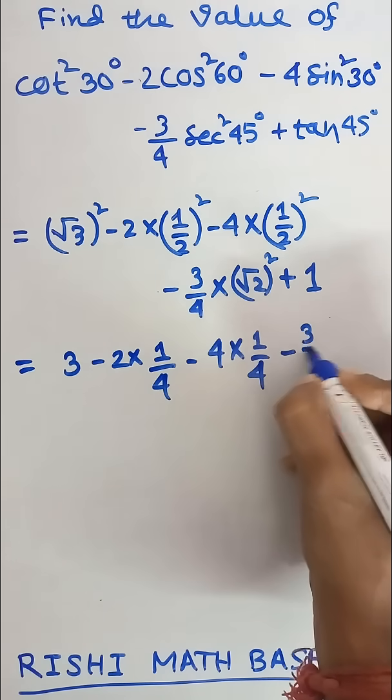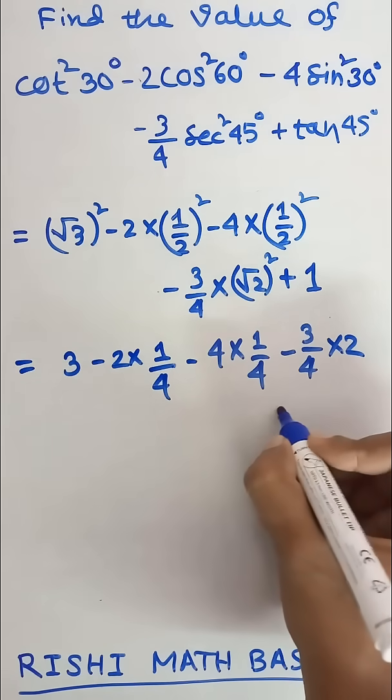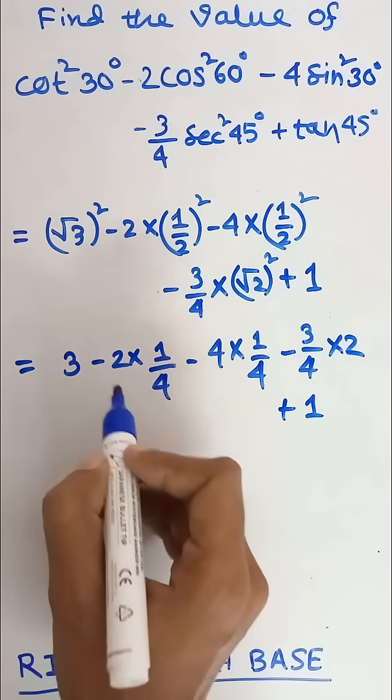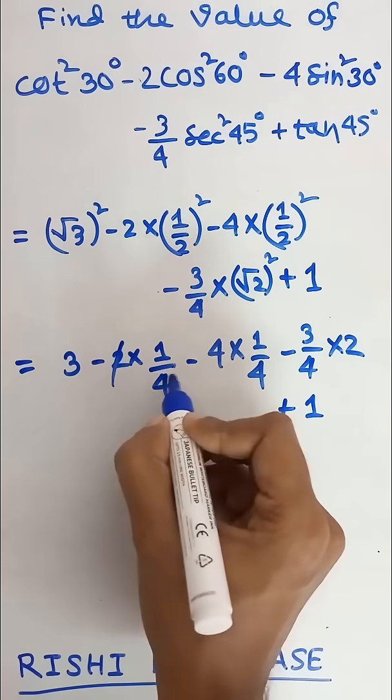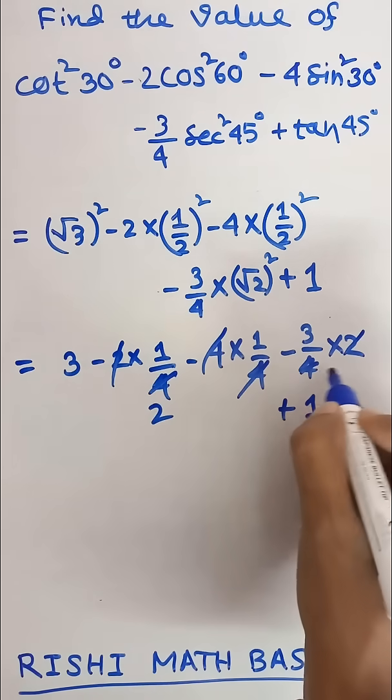Minus 3 by 4 into 2 plus 1. From where the 2s and 4s cancel.